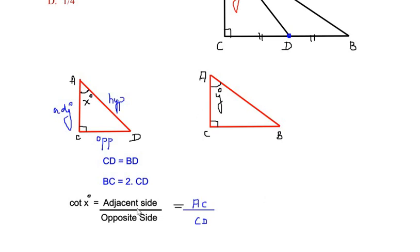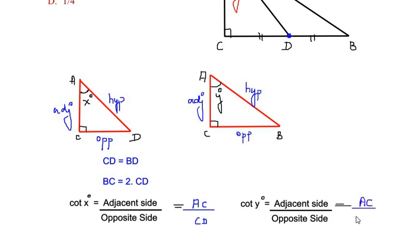Similarly, the cot y is written as adjacent side over opposite side. So for angle y, we have the side BC as the opposite side and side AB as the hypotenuse, and side AC as the adjacent side. So let us write over here, adjacent side is AC over the opposite side is BC.